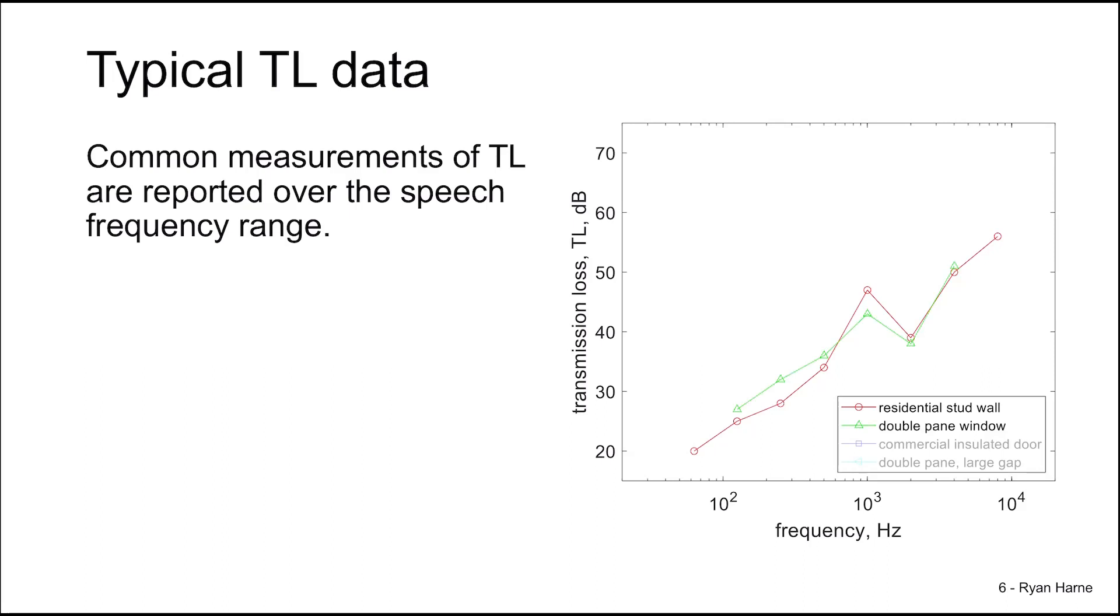The same thing occurs for a double pane window, although the specific values of transmission loss are different. Likewise, for a commercial insulated door, we have the same trend.